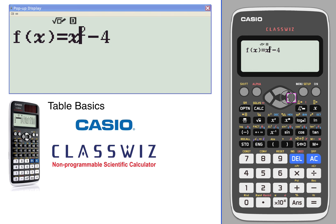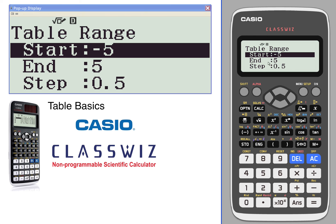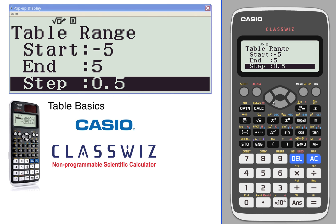If you want to change any of those settings, you can do that by using AC. Once that's set, you can go back and set your table range any way you want.